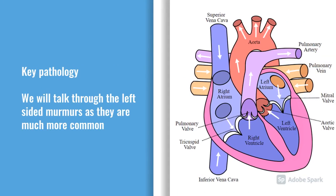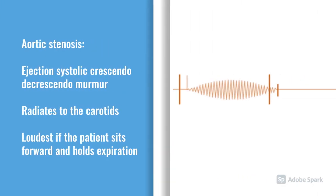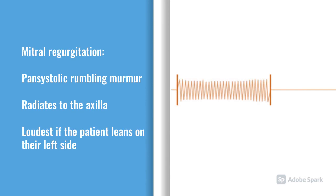Key pathologies to know: Aortic stenosis gives a classically ejection systolic murmur with a crescendo-decrescendo pattern, which typically radiates to the carotids. It's loudest if you sit the patient forward and hold on expiration, because it's an aortic murmur. Mitral regurgitation is probably the most common valve pathology — it's a pansystolic rumbling murmur that radiates to the axilla, and it's loudest if you lean the patient over onto the left.